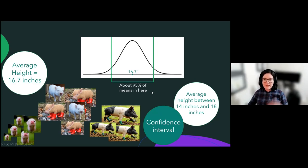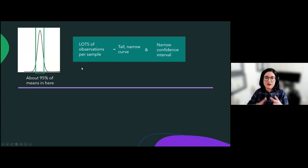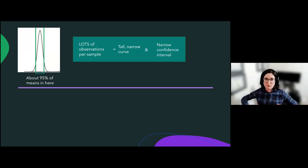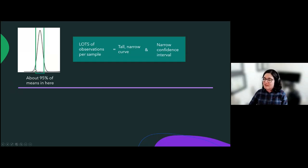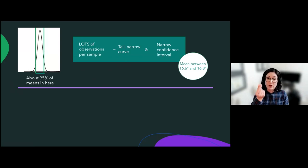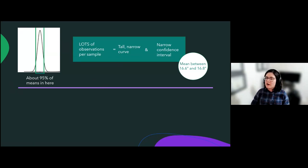Confidence intervals are very helpful because instead of just saying 'I think the mean height of a teacup pig is 16.7 inches' — and probably being wrong, because we know means can vary with different samples — we can use a confidence interval, which gives us wiggle room in our mean. We can say we're pretty sure that the average height of teacup pigs is between 14 inches and 18 inches, giving us more probability of being right. The shape of this bell curve can change depending on the type of sample you have. If you have lots of observations — say 500 teacup pigs instead of 10 — you get a really tall, narrow bell curve, which means 95% of the means show up in a really small interval. So if we had a large sample, we might say the mean is between 16.6 and 16.8 inches — very precise.